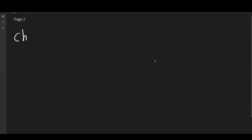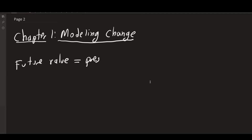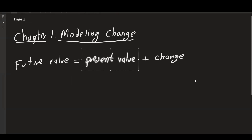Let's go into chapter one. Chapter one is modeling change. One of the main things about modeling change is this way of looking at change: the future value is equal to the present value plus some change. The idea is that we want to predict the future of some value, and in this chapter it's going to be the present value plus something that changes.